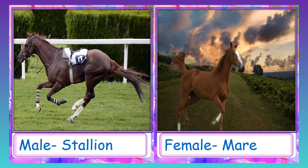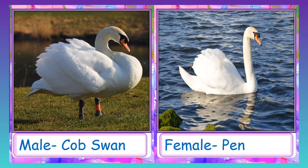Horse: male horse is called stallion and female horse is called mare. Swan: male swan is called cob and female is called pen.